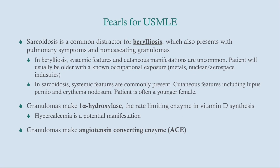A key USMLE pearl: sarcoidosis is a common distractor for berylliosis. Both can present with systemic signs, cough, pulmonary issues, bilateral hilar lymphadenopathy, and granulomas on imaging. Differentiate by history: an older man with a history of working with metals or in the nuclear or aerospace industry points to berylliosis. A younger woman — particularly a black woman — with cutaneous manifestations points to sarcoidosis.